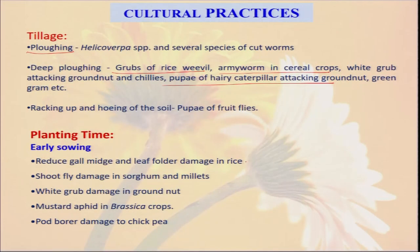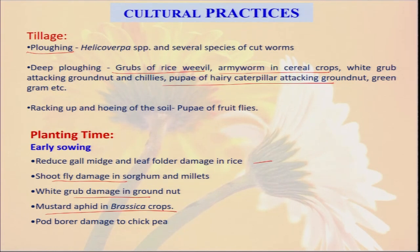Early sowing reduces gall midge damage. It also reduces shoot fly damage, white grub damage in groundnut, mustard aphid in brassica, and pod borer damage of chickpea. So for certain crops, there is a need for early sowing. Probably in certain other cases, we go for late sowing. So always we have to take care of the nature — if we want to reduce our insect pest population in our organic farm, which type of sowing we have to adopt.